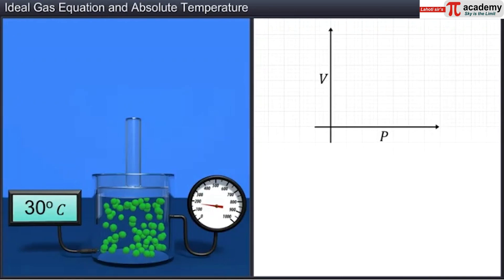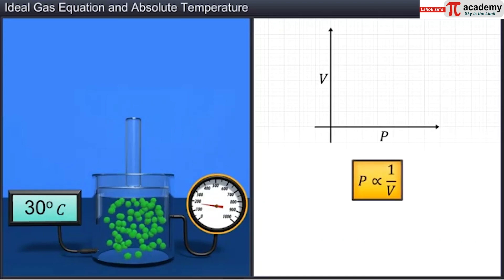Boyle's law states that if the temperature of a given mass of gas is constant, then its pressure is inversely proportional to its volume.